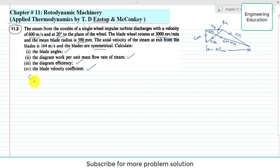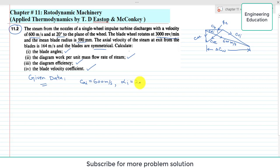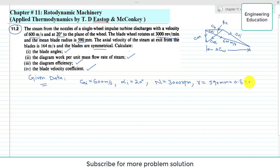First, we will write the given data. The absolute velocity C_AI is given as 600 meters per second. The nozzle angle alpha_I is 20 degrees. The blade wheel rotates at N = 3,000 RPM, and the mean blade radius r is 590 millimeters, or 0.59 meters.